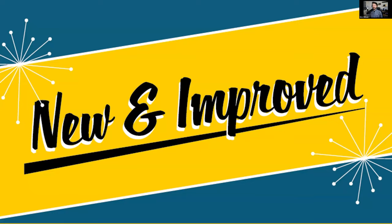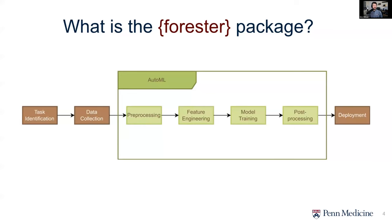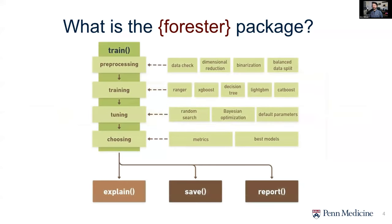So what is the Forrester package? Forrester is an AutoML tool for R, for tabular data, regression, and binary classification tasks. It wraps all of that up into one nice, pretty little function — the train function.